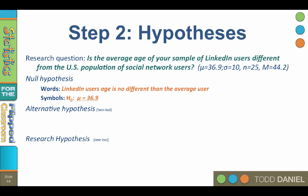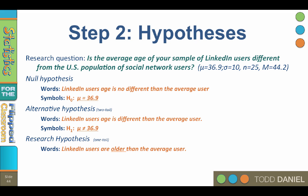For the two-tailed alternative hypothesis, in words: the sample of LinkedIn users is different than the population of average users. In symbols: H-sub-one colon mu does not equal 36.9. Just for practice, let's also write a one-tailed alternative hypothesis, even though we're not going to use it in this case. In words: the sample of LinkedIn users is older than the population of average users. In symbols: H-sub-two colon mu is greater than 36.9. For the future, when writing the null and alternative hypotheses, follow this trick: when doing a two-tailed test, start by writing the null hypothesis; when doing a one-tailed test, start by writing the alternative hypothesis.